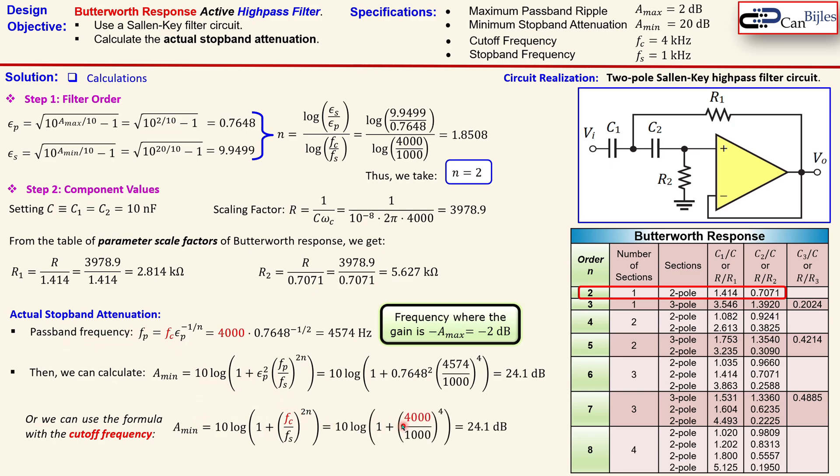Then you have actually again here 4000 over 1000. That is of course from specifications to the power 2 times 2 which is then 4, and that will result in 24.1 dB. So this is exact same as before.